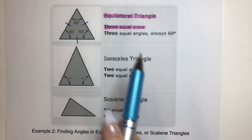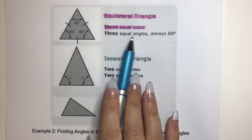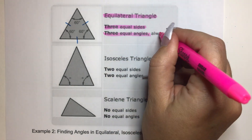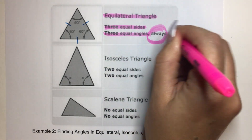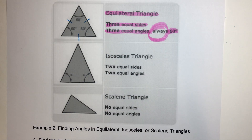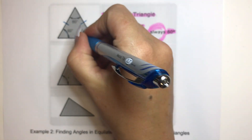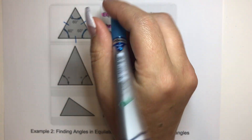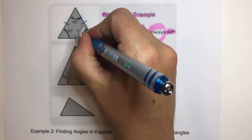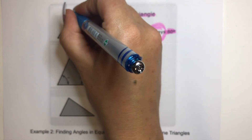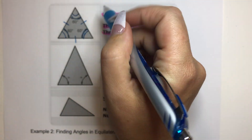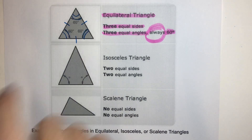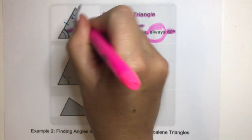Equilateral triangles have three equal sides and they also have three equal angles that are always 60 degrees. So three equal sides and three equal angles as well. They use these little arc marks to show that. Sometimes they have two arc marks, and as long as they have the same amount of arc marks, that means they are congruent. So all three are congruent — all 60 degrees for an equilateral triangle.